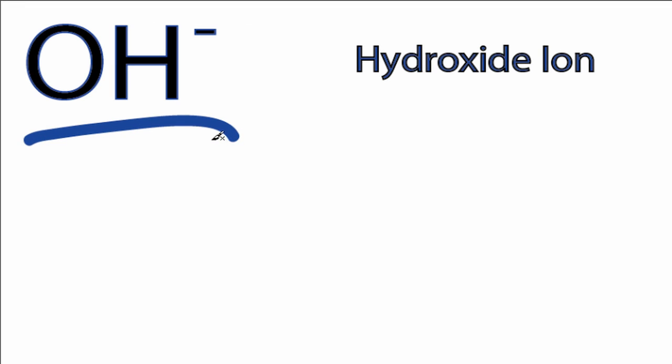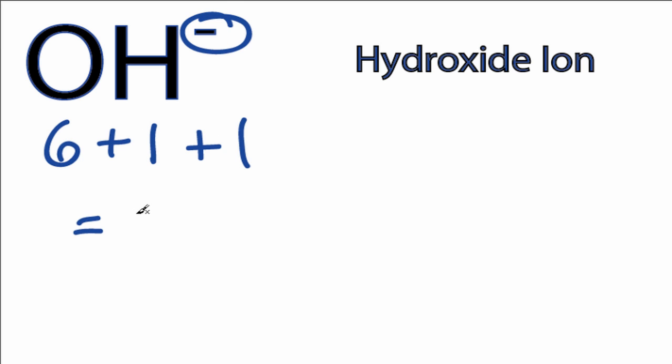This is the OH minus Lewis structure. We have six valence electrons for oxygen, plus one for the hydrogen, and then this negative sign up here means we have an additional valence electron, for a total of eight valence electrons for the OH minus Lewis structure.